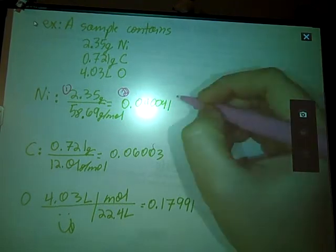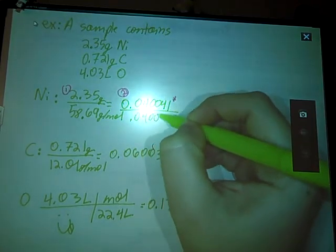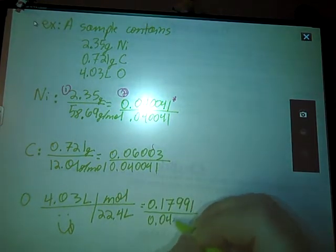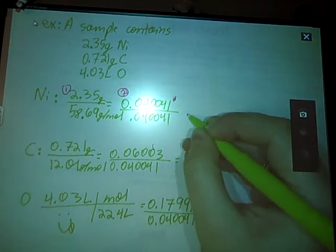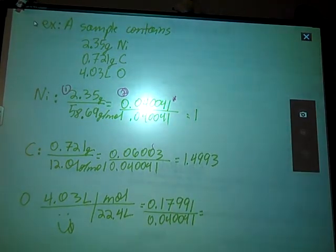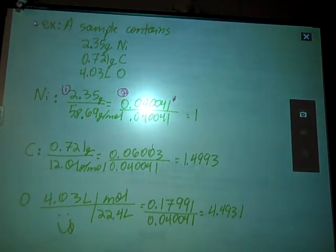So I'm going to divide all three by this 0.04 number. All right, so let's get these number crunchings going. This one is 1. That one's easy. 0.06003 divided by 0.040041 gives me 1.4993. And my last one, 0.17991 divided by 0.040041 gives me 4.4931.